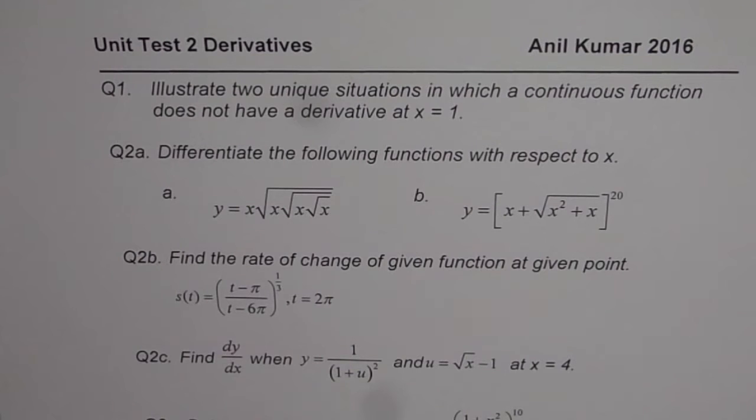Question number 2b, find the rate of change of given function at given point. So this question is from the book. We have given displacement and you need to find rate of change which will be velocity at t equals to 2π.